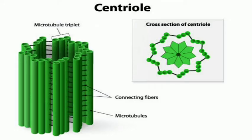These centrioles in the centrosome are present at right angles to each other. Each centriole is made up of 9 triplets of microtubules, meaning 9 groups each composed of 3 tubules, so 27 microtubules are present in each centriole.